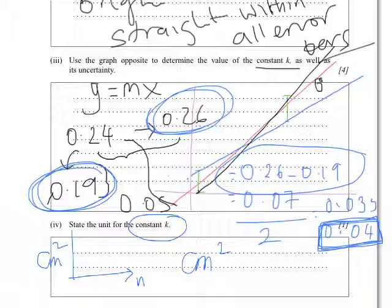Last question. State the unit for the constant k, and that is simply the unit on the y-axis, which is centimeters squared, divided by the unit on the x-axis, and there's no unit. So the constant k has a unit of centimeters squared.